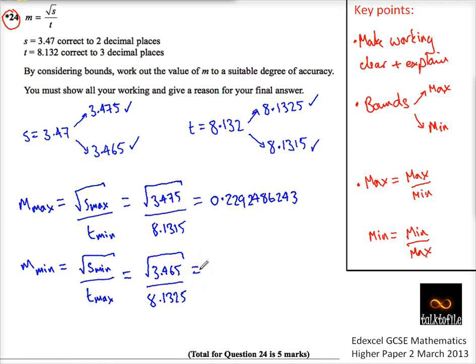So again, let's just go and change the values in here. So we've got 3.465 on top, and then 8.1325 on the bottom. So I've got 0.2288903839, and we can see this is actually smaller than this value.